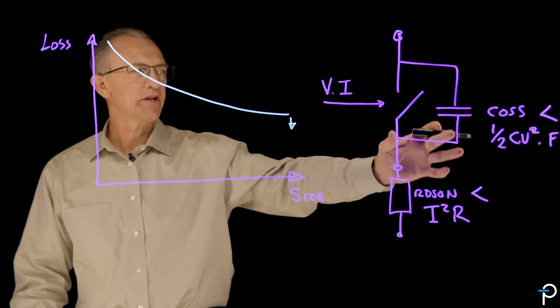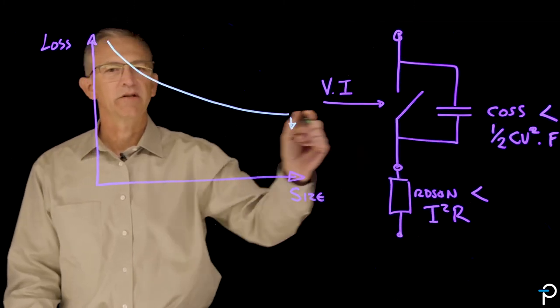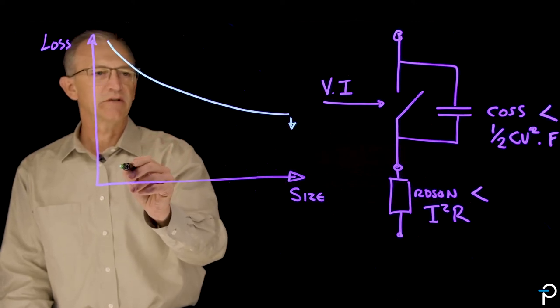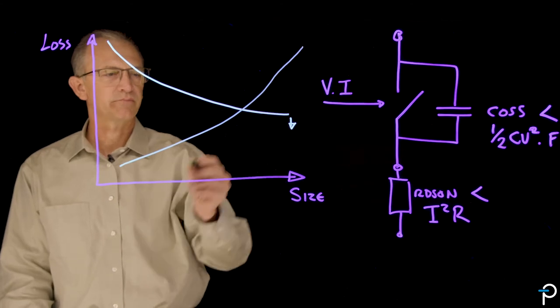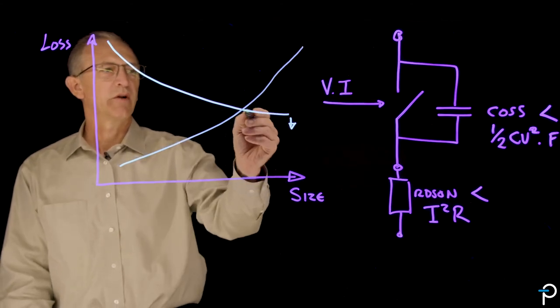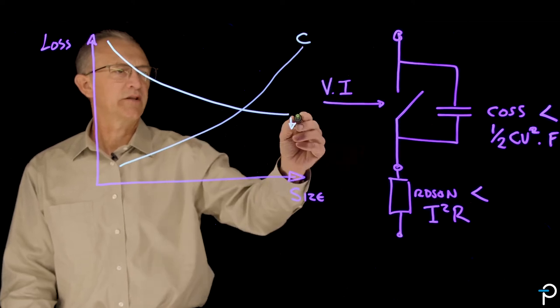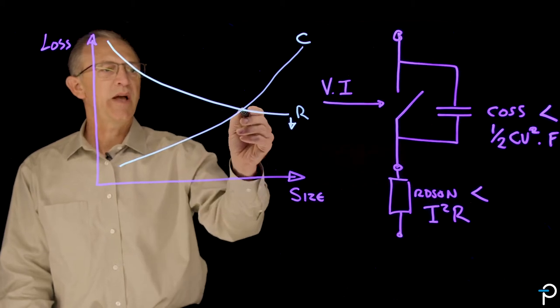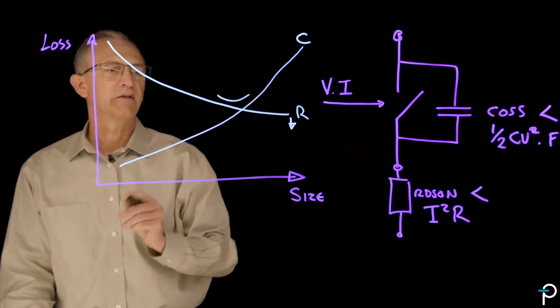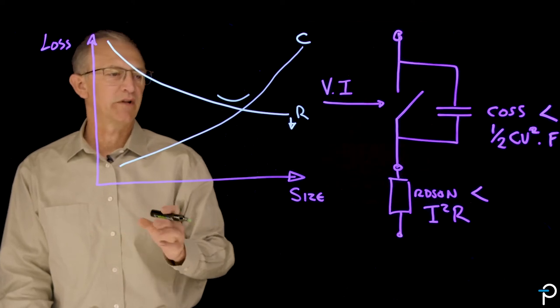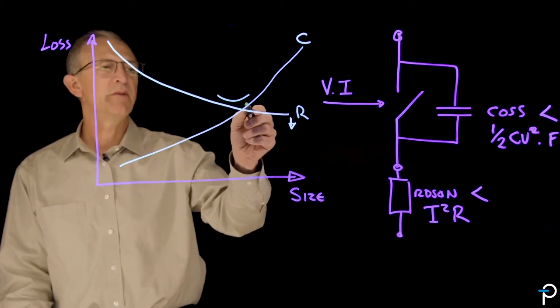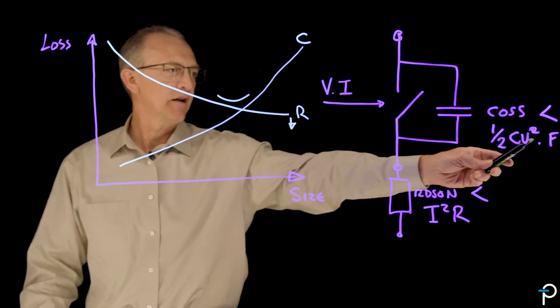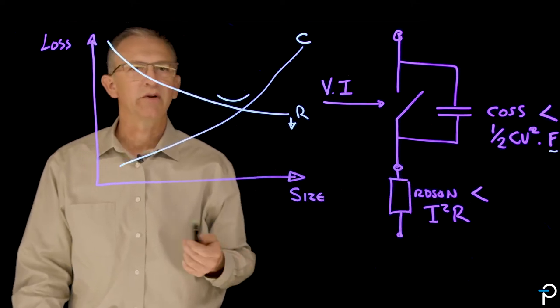However as the transistor gets bigger you have increased capacitance. So it turns out that the losses due to capacitance go up with size. So at some point these are capacitive related losses and these are resistive related losses. And the best you can do is at this point here where they cross. At that point you have a minimum of capacitance and resistive losses combined. And of course that's affected by the frequency at which you choose to switch.